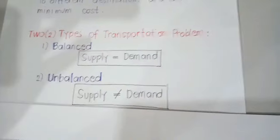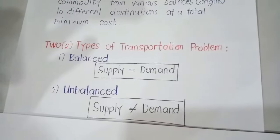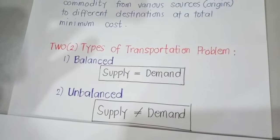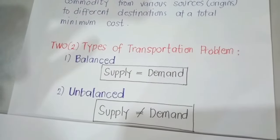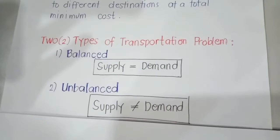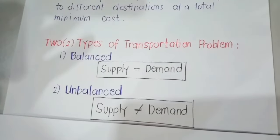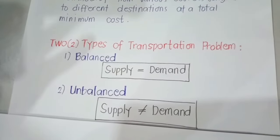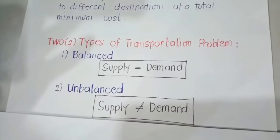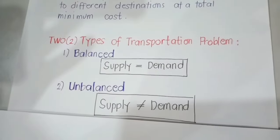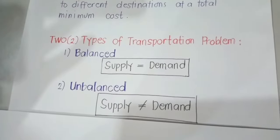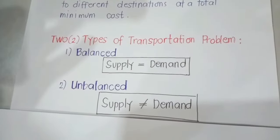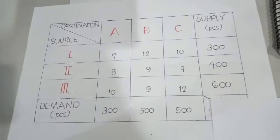There are two types of transportation problems. First, we have the balanced transportation problem, and second, we have the unbalanced transportation problem. A balanced transportation problem is where the total supply equals the total demand. On the other hand, unbalanced is where supply is not equal to total demand. To better understand the difference between the two, let us look at an example.